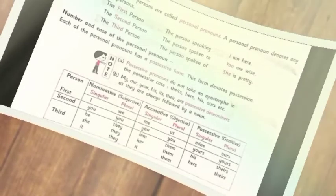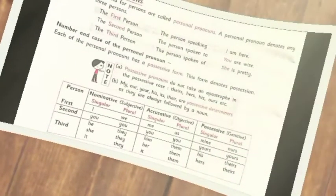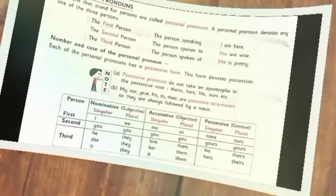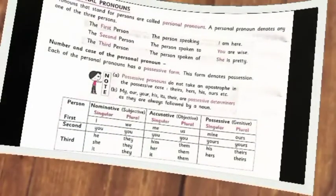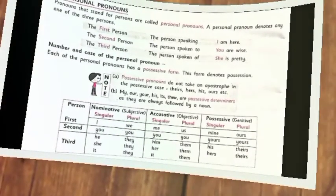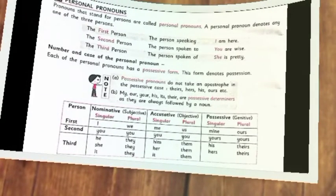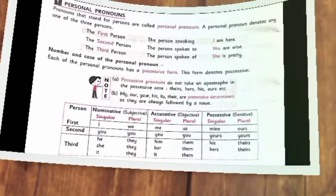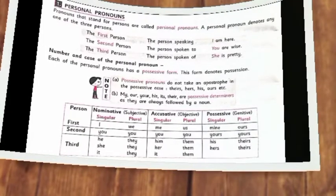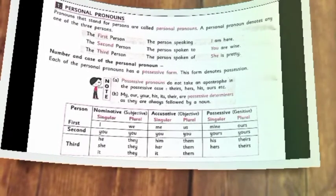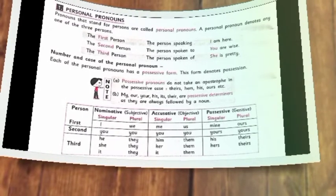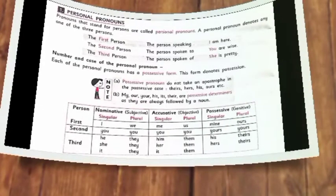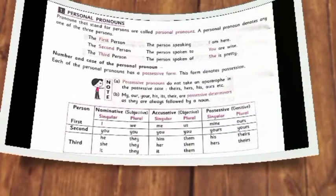We start with personal pronouns. What are personal pronouns? Personal pronouns are pronouns used for persons. There are three persons in English. They are: the first person — that is, the person speaking — which is 'I' and 'We'; the second person — that is, the person spoken to — which is 'You'; and the third person — that is, the person spoken of — which is 'He,' 'She,' 'They,' etc.